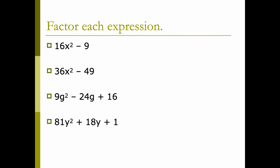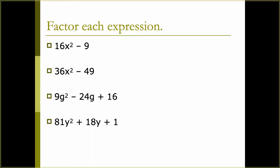Factor each expression. We have 16x² - 9. We do have a perfect square minus a perfect square, so we use our shortcut. The square root of 16x² is 4x. The square root of 9 is 3. We have two different factors — one positive, one minus — so: (4x + 3)(4x - 3).